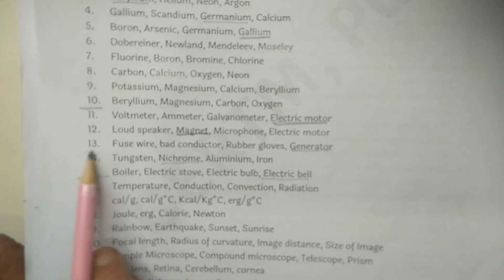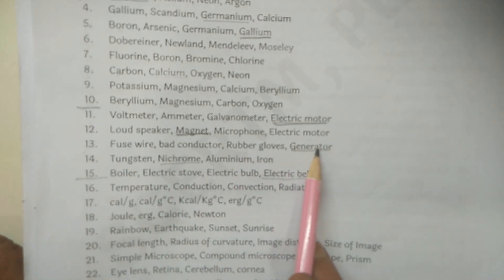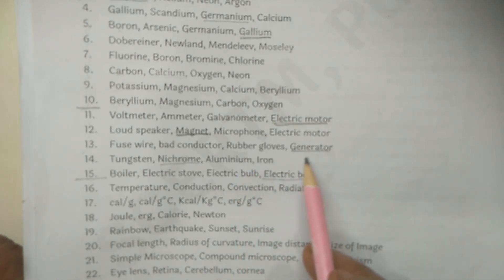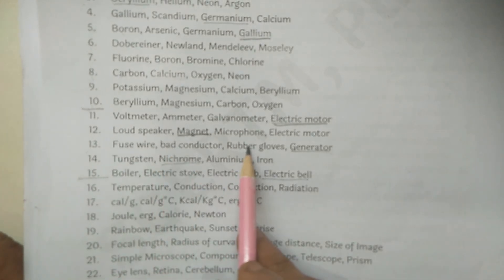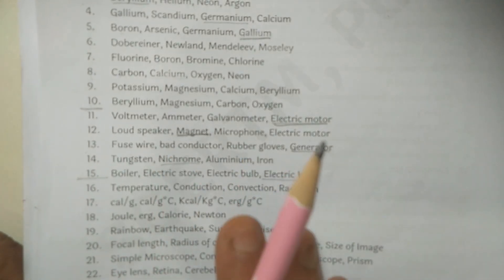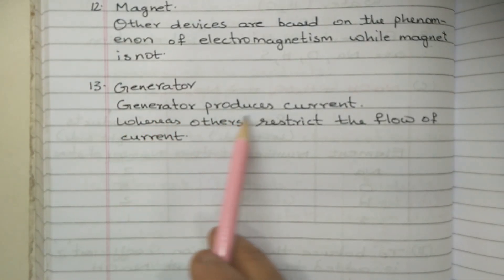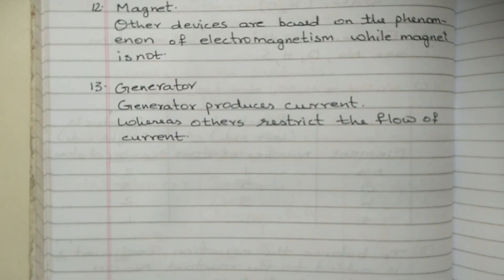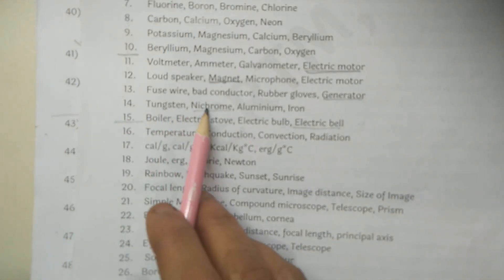Q13: Fuse wire, bat conductor, rubber gloves, and generator - the odd one out is Generator. The generator produces current, whereas fuse wire, bat conductor, and rubber gloves restrict or control the flow of current.